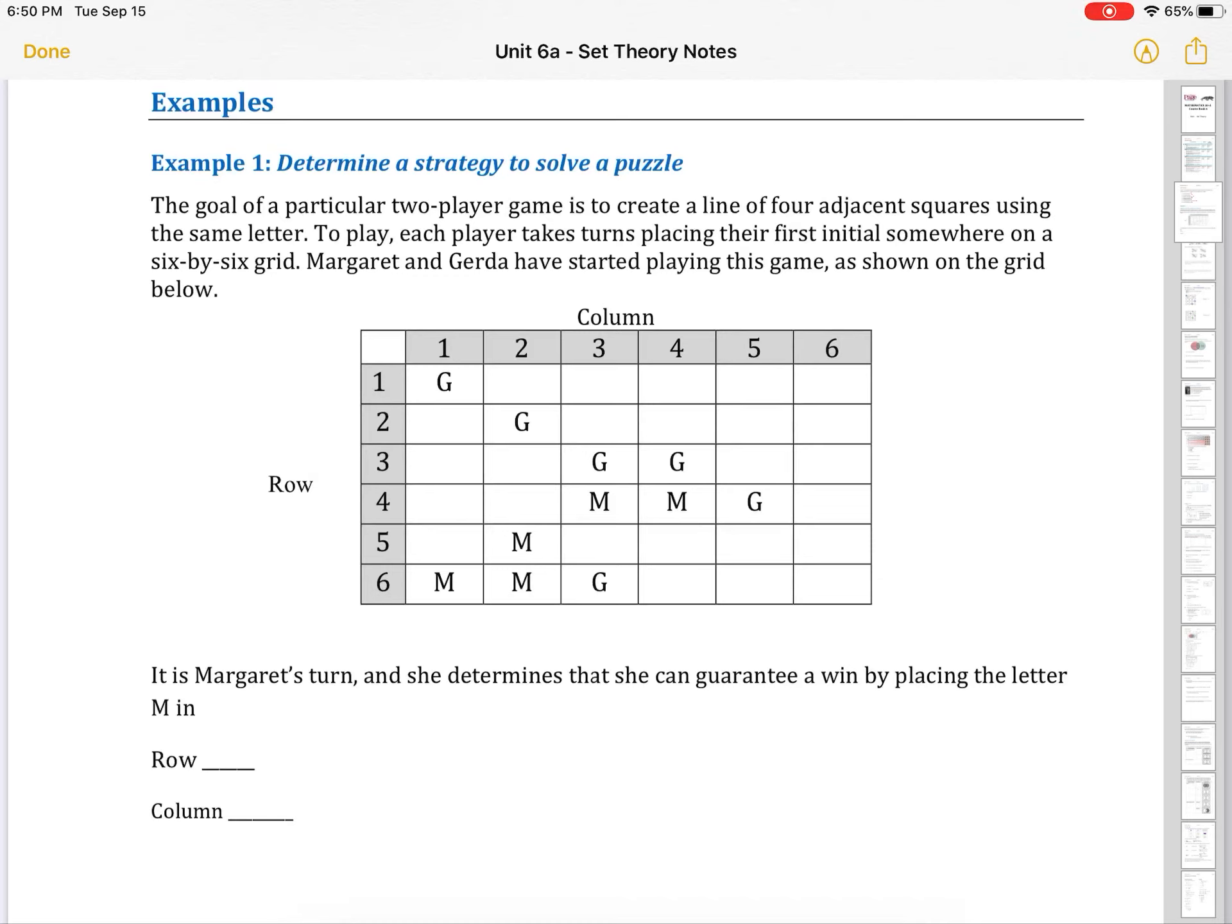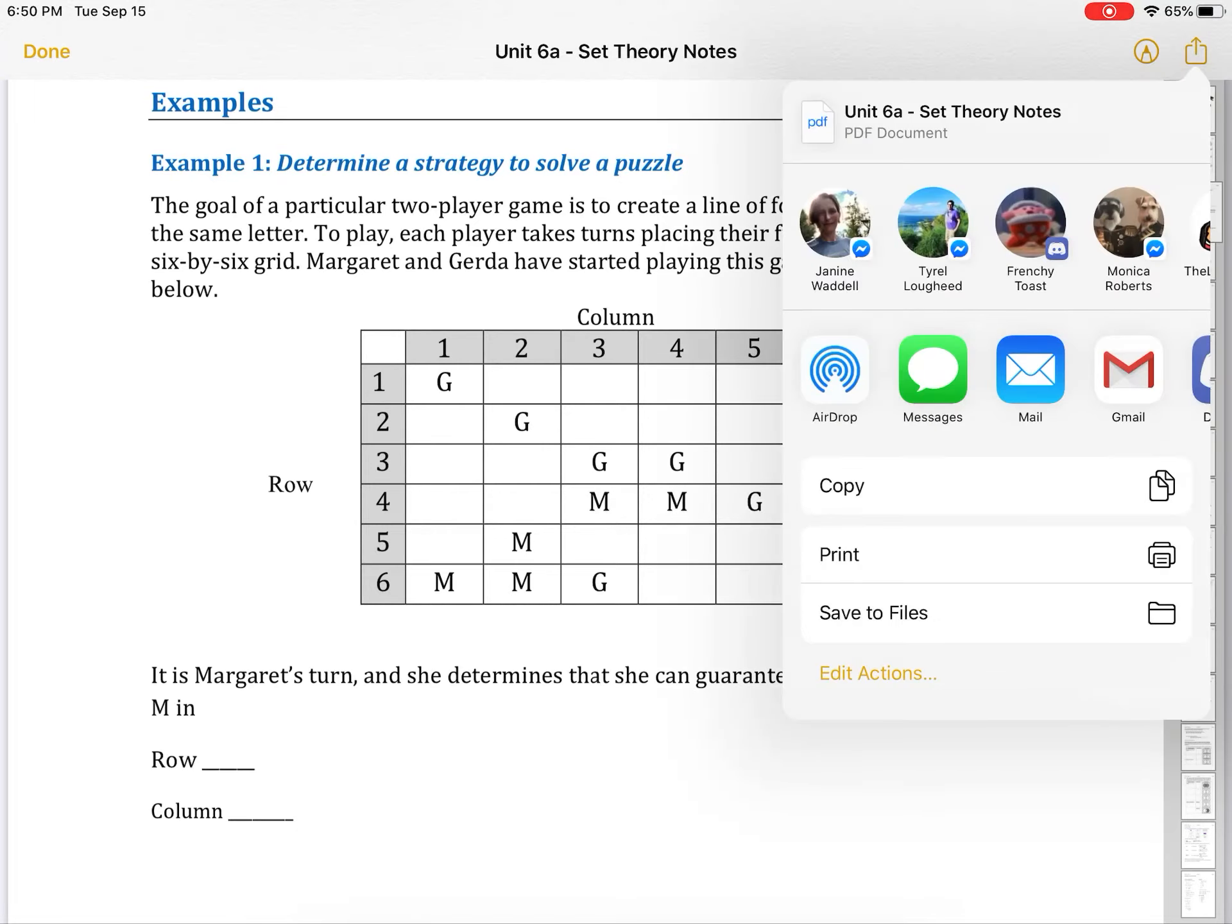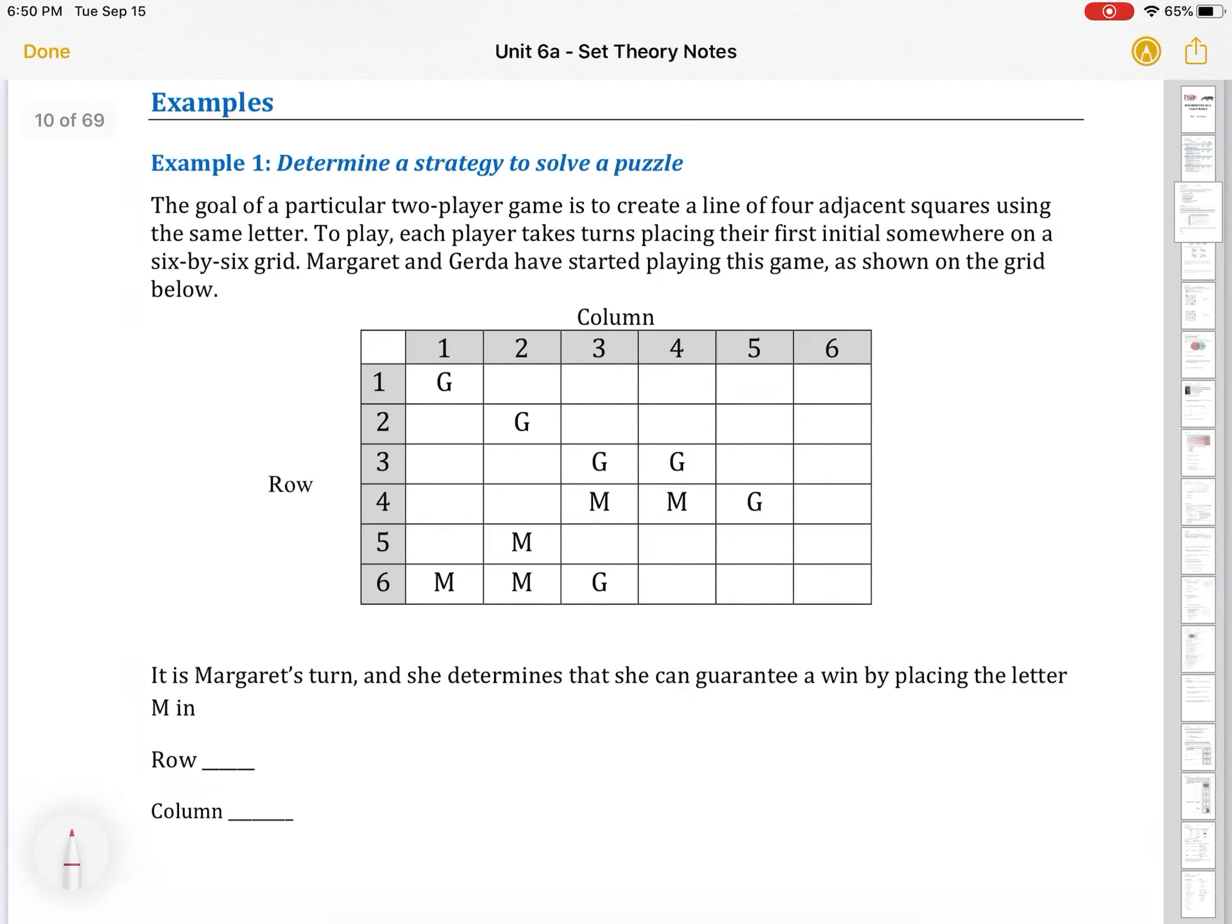Some examples. The goal of a two-player game is to create a line of four adjacent squares using the same letter. To play, each player takes turns placing their first initial somewhere on the grid six by six. This is a game you might have played in the car driving. Margaret and Gerda have started playing this game as shown on the grid below. It's Margaret's turn and she determines she can win by placing the letter M in what row. Now, my strategy for approaching this is to actually color code things.